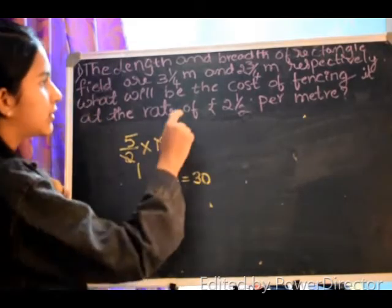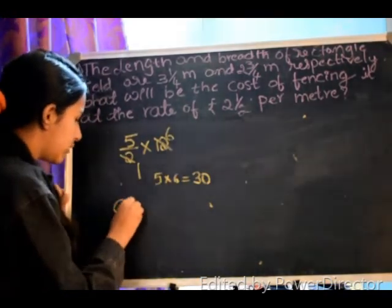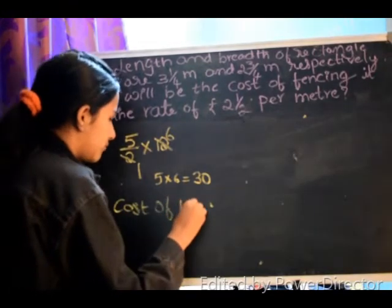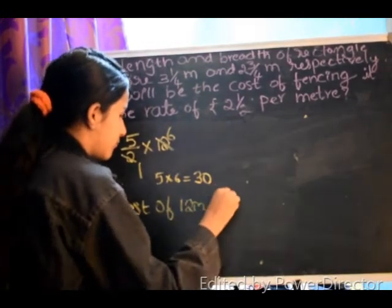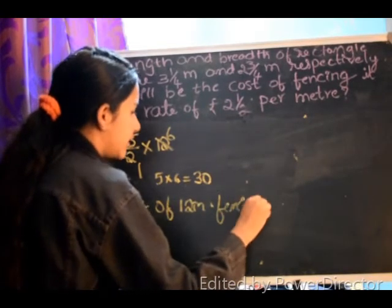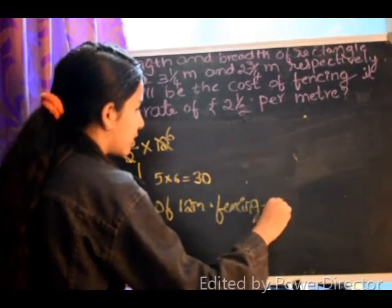The cost of 12 meter fencing is equal to Rs. 30.